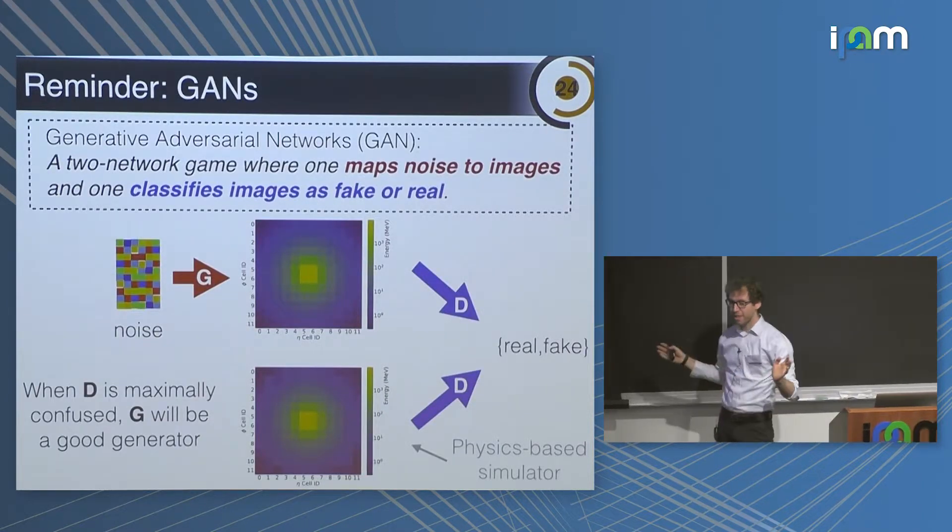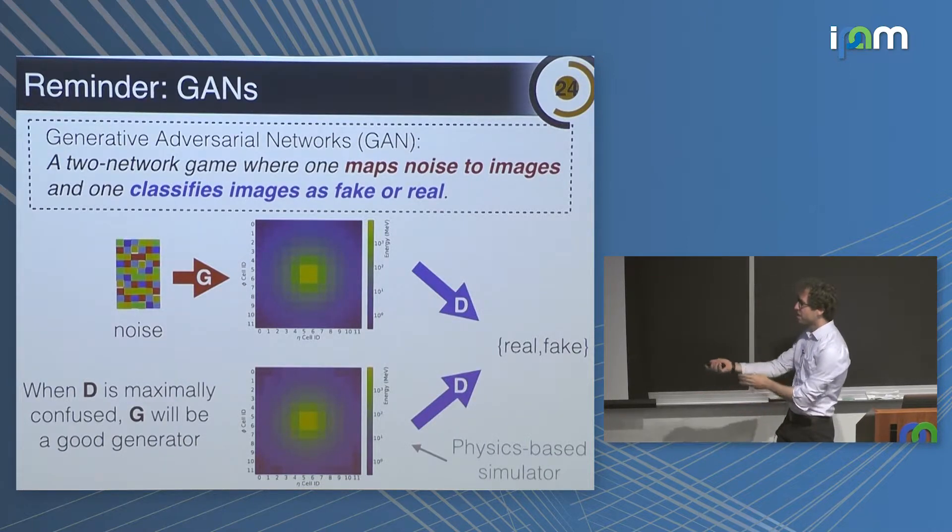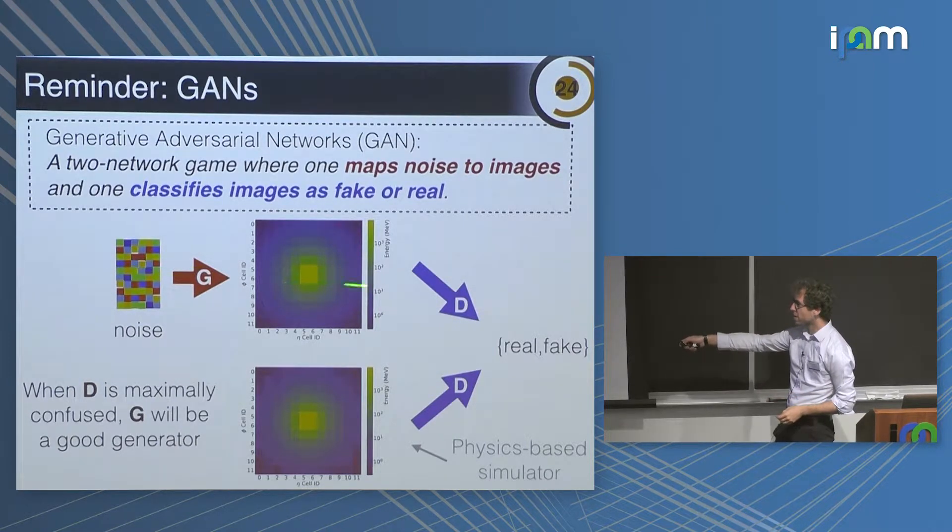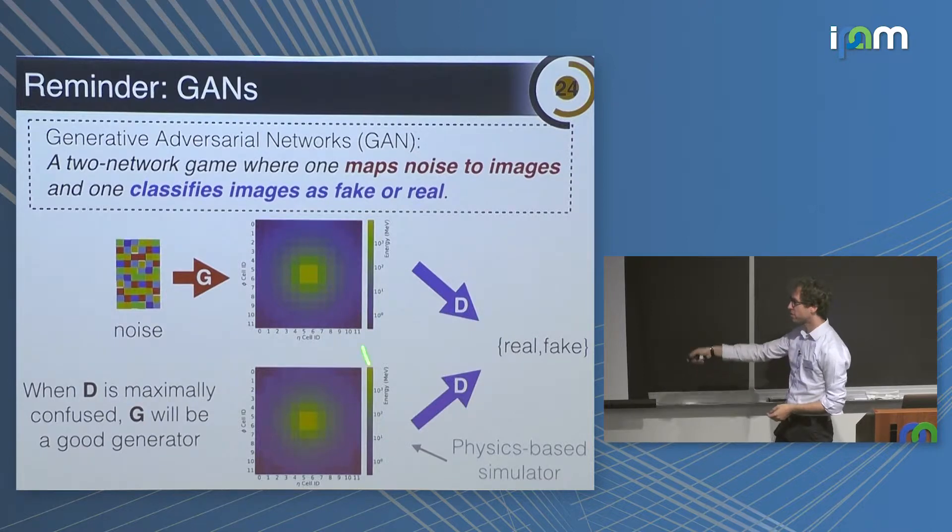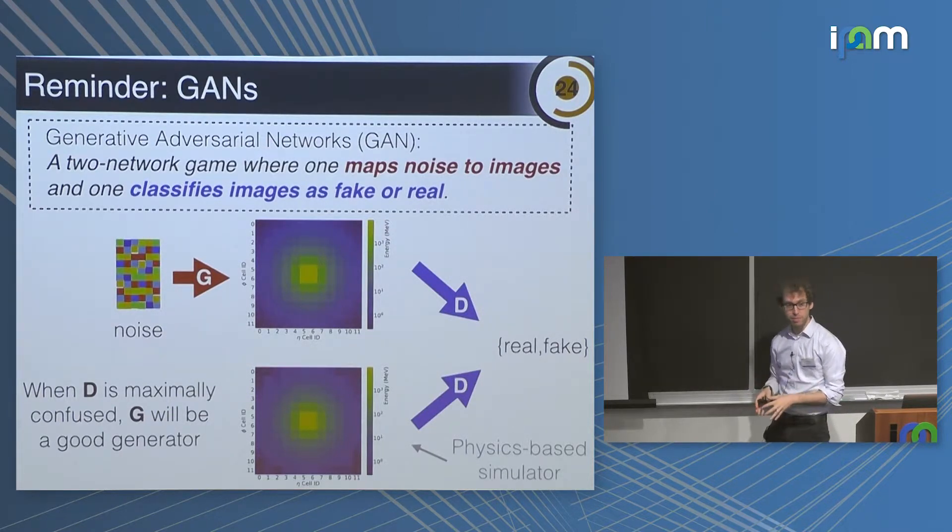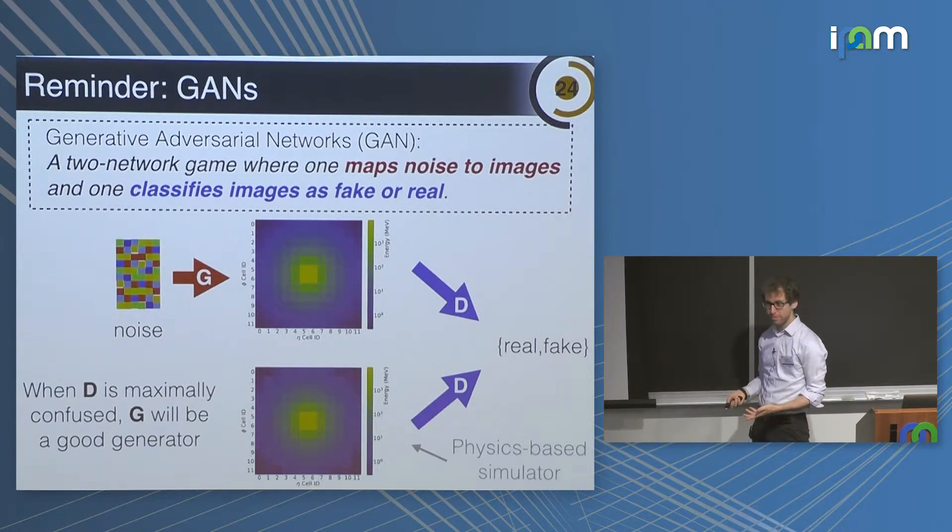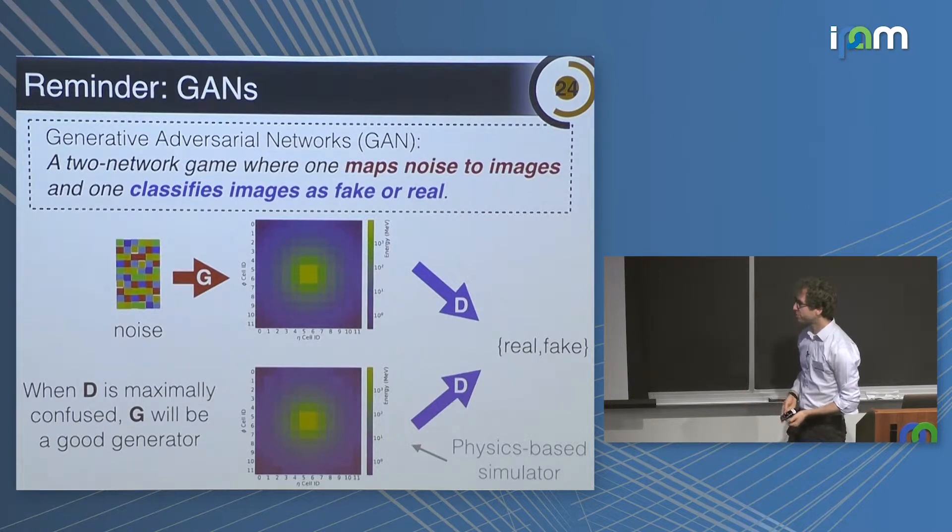I think people here are probably familiar with GANs, but just super quick. The idea is noise to structure over here. And there's a second network that tries to distinguish the two images and decide if the images are real or fake. The real images here are still simulated images from our very expensive simulator. We would like to have our generator learn to produce the expensive simulator as well as possible because it's much faster.